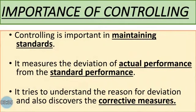Now let's look at the importance of controlling. Controlling is important in maintaining standards. It measures the deviation of actual performance from the standard performance. The word 'deviation' means the difference between set goals or standard performance and actual performance. To understand the reasons for failure or deviation and to discover corrective measures, the controlling function plays a very important role.